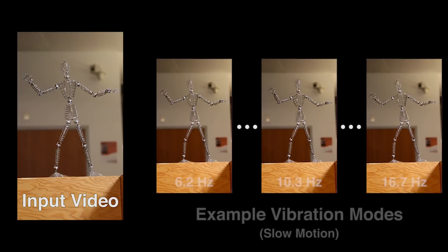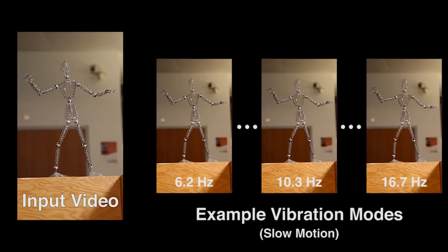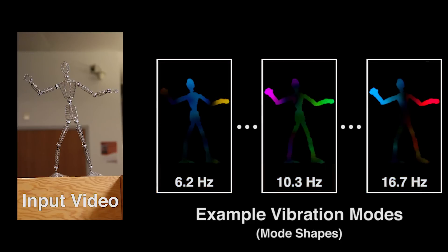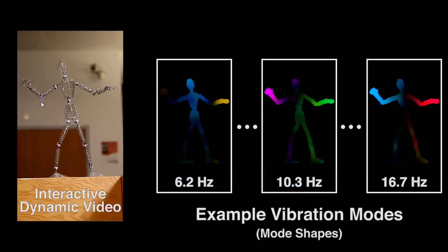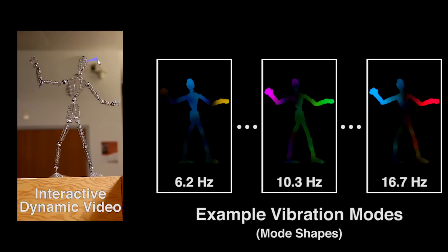The key to our technique is in analyzing the original video to find what are called vibration modes. Each one of these modes represents a different way that an object can move. And by identifying the shapes and frequencies of these modes, we can start to predict how the object will act in new situations.